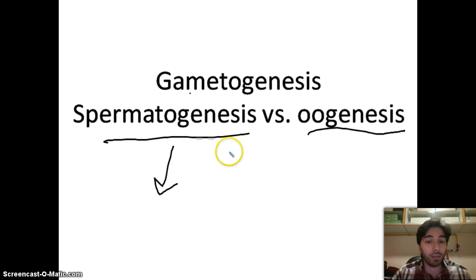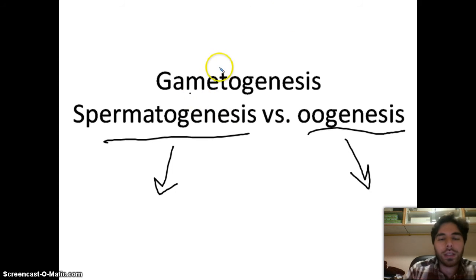Oogenesis is the process of formation of eggs, also called oocytes or ova, in the female. We've seen how meiosis occurs, and meiosis is the production of gametes. But the processes are different in males and females. The sperms are much different than the eggs, and we will see more of these differences.